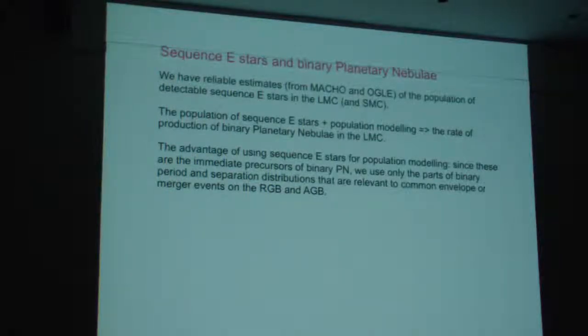So we know the exact number of red giants of all types in the LMC. And by modeling the populations of sequence E stars relative to red giants, we can find out the rate of production of binary planetary nebulae by these merger events. And so that's what's been done here. And the advantage of doing this rather than just taking a main sequence binary fraction and doing all those calculations, is that we're looking at the immediate precursors, we're only looking at those binaries of the appropriate parameters to produce the binary planetary nebulae.